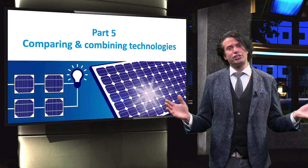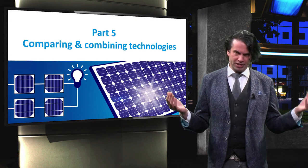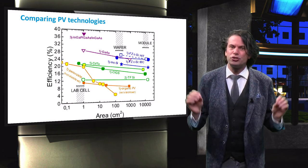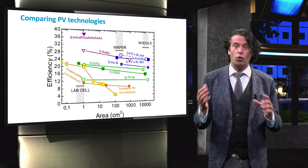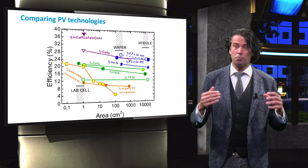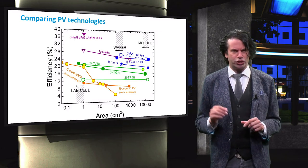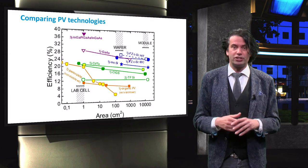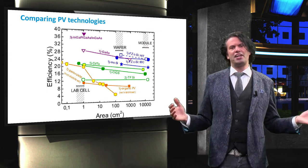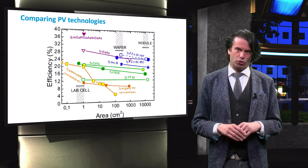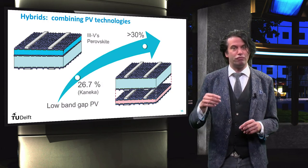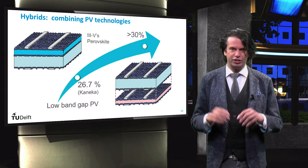In the final section of this course we will combine and compare the different PV technologies. You will obtain the skills you need as an engineer to decide which solar cells work best in what situation. We will compare the performance of the different PV technologies in terms of their niche markets and market shares, and discuss their upscaling potential in industry and their projected learning curves for the near future. Finally, we will discuss hybrid solar cells, where different PV technologies are combined in order to produce very high performance or very cheap solar cells.